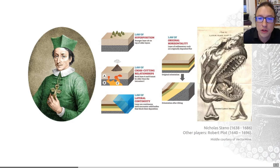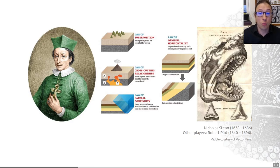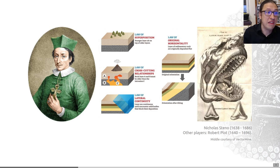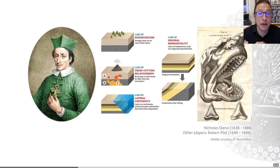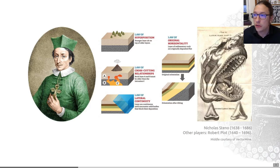Steno noted that the shark's teeth resembled stony objects called glossopetrae, or tongue stones, found in rocks and previously believed to have fallen from the sky or grown naturally in rocks. He argued instead that these were shark teeth from the mouths of once-living but now dead sharks, which had come to be buried in mud or sand — a sediment that had since become dry land. He suggested the difference in composition between living shark teeth and those found in rocks was due to chemical alteration without a change in form. This was very perspicacious and reflects many ideas we hold about fossils today.